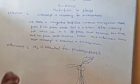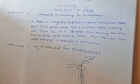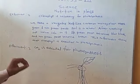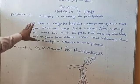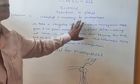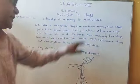Why did the green part become blue-black? Because starch is formed in that part due to the presence of chlorophyll. So we can say that chlorophyll is necessary for photosynthesis.